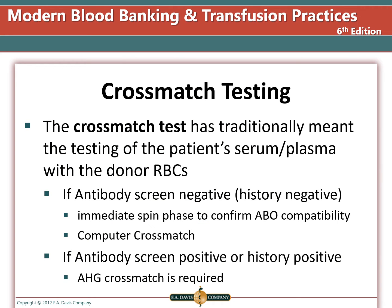In the past, we cross-matched every unit of blood — mixing the patient plasma with the donor cells to determine if there is an incompatibility. If the antibody screen is negative, there is no history of antibodies, and the facility has a validated computer cross-match system, then a computer cross-match is acceptable. If the computer cross-match is not available, an immediate spin cross-match can be done.